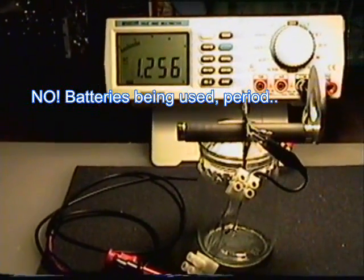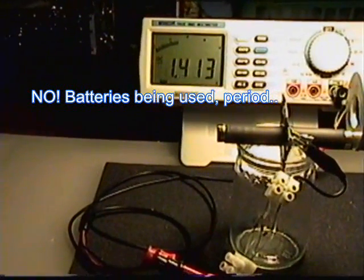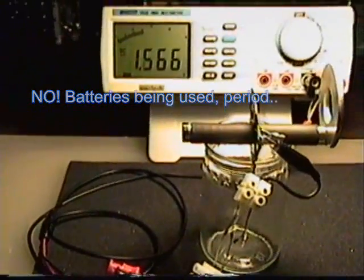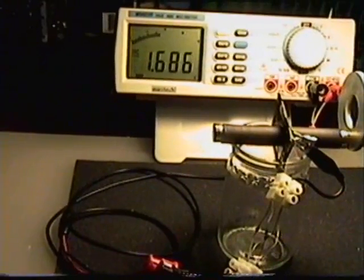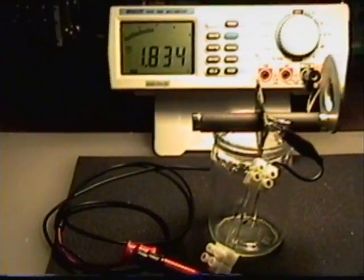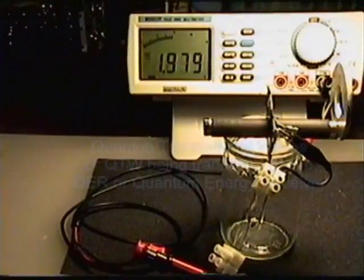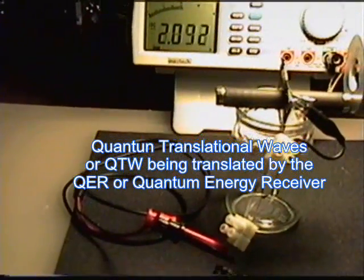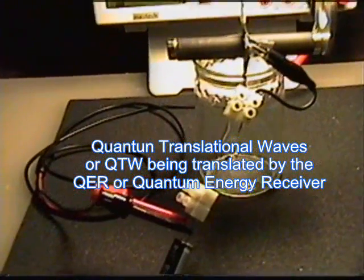What it's composed of is, if you look up some of the work of Dr. Wilhelm Reich, you will find that I have a unit very similar to what he was using in his boxes where he thought he was picking up orgone energy. Actually, what we have here, this receiver is receiving and performing quantum translational waves, converting them into usable energy via this bridge rectifier.